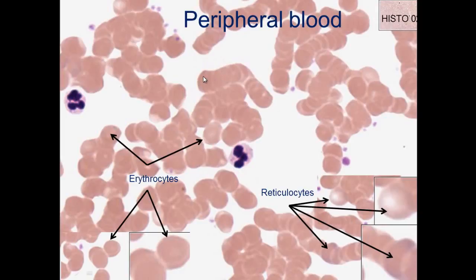In a peripheral blood smear, red blood cells and smaller platelets are visible. The red blood cells released from bone marrow are actually reticulocytes, which have a blue tint. They pass through the spleen a couple of times and then become erythrocytes, losing their blue tint as they lose their ribosomes.